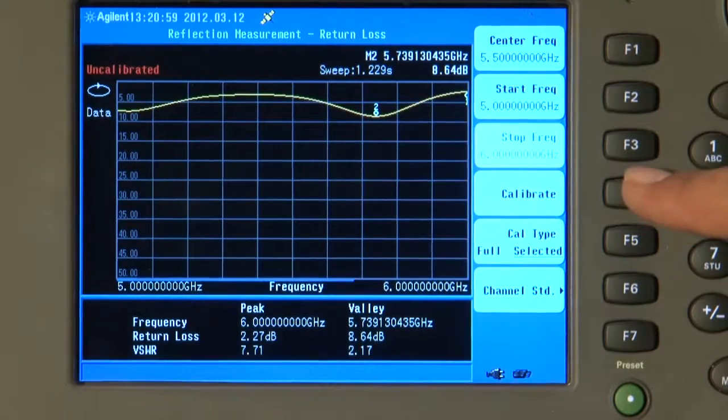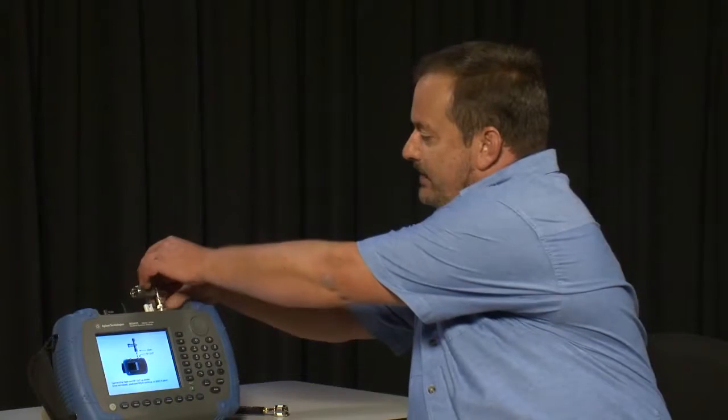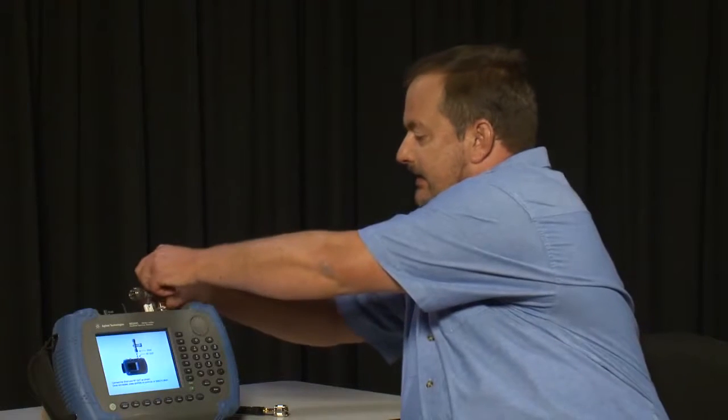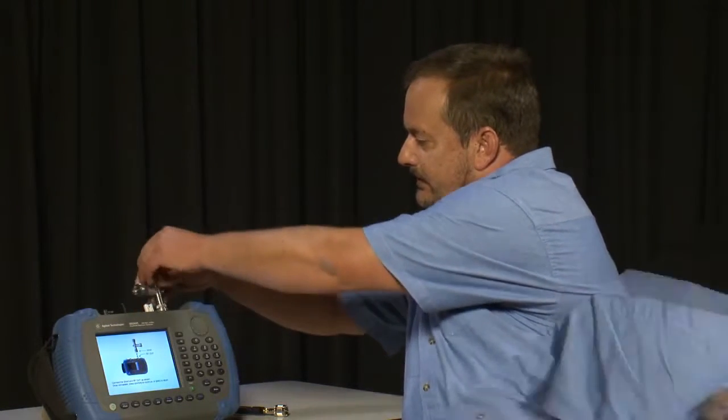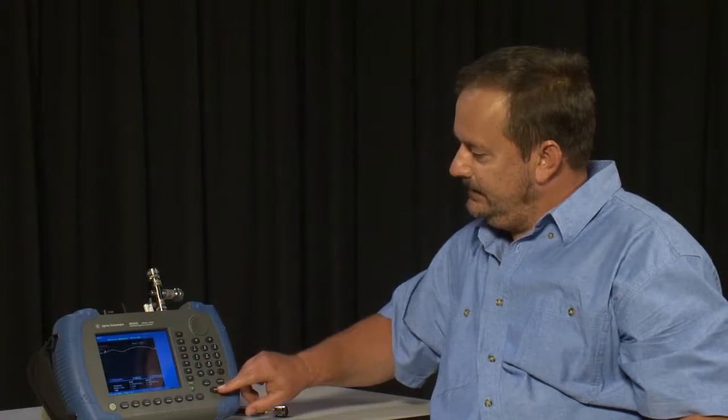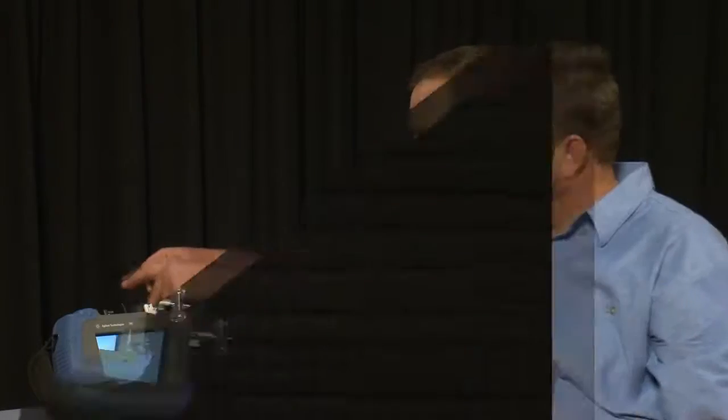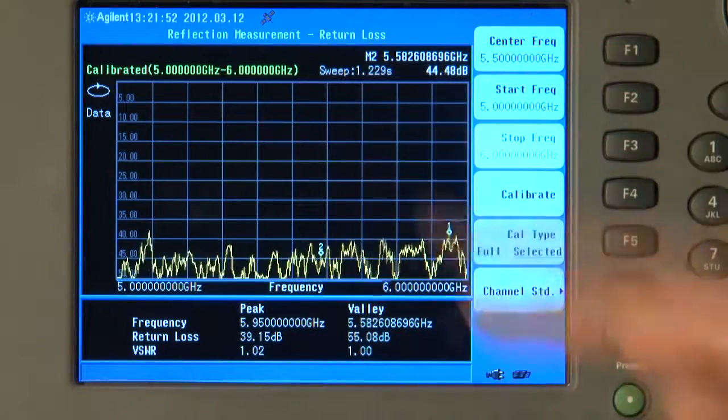So we press Calibrate and follow the on-screen instructions. We connect an Open and press Enter, and we connect a Short and press Enter, and we connect a Load. And now the instrument is calibrated between 5 and 6 GHz.